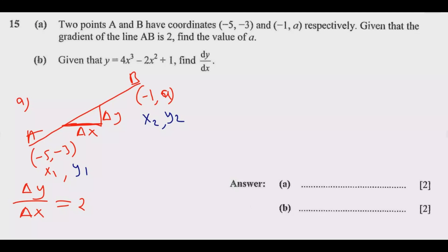So the gradient m is equal to the change in y, which is y₂ - y₁, over x₂ - x₁. This m is equal to 2, which we are given here. So now let us start substituting.